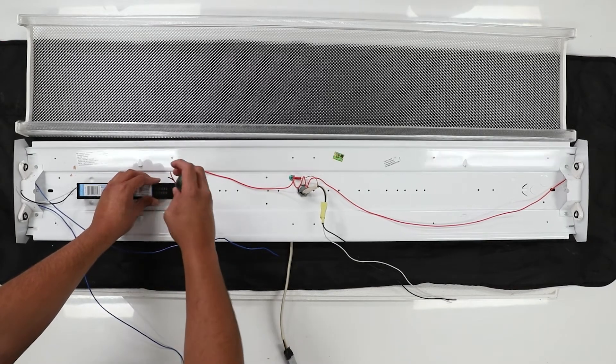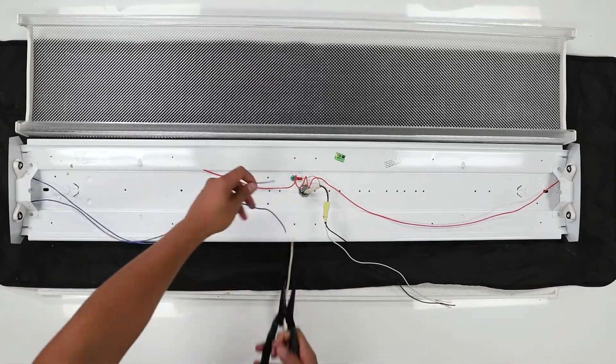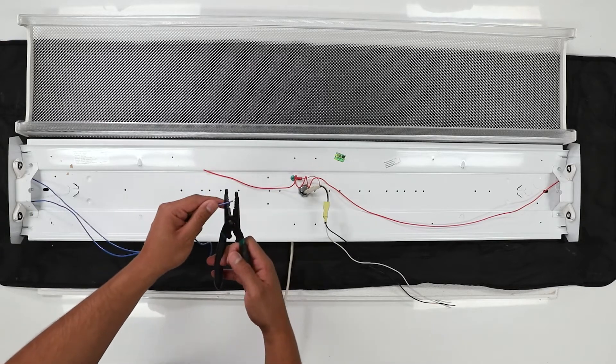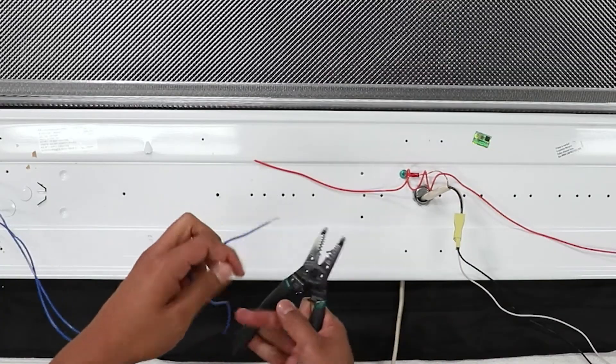Once all the wires have been cut, remove the ballast using your nut driver. Strip the socket's wires, as well as your hot and neutral wires, about one inch.